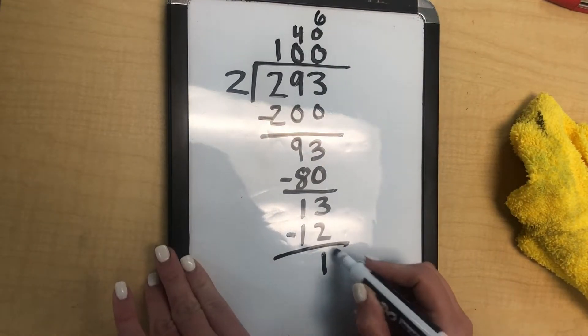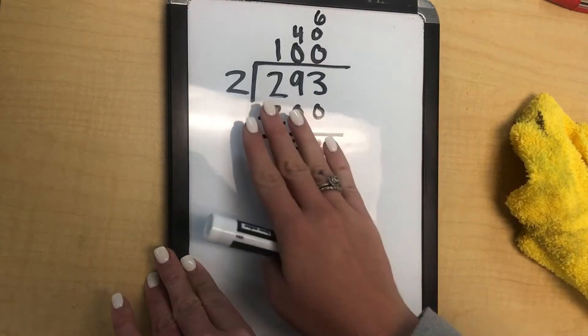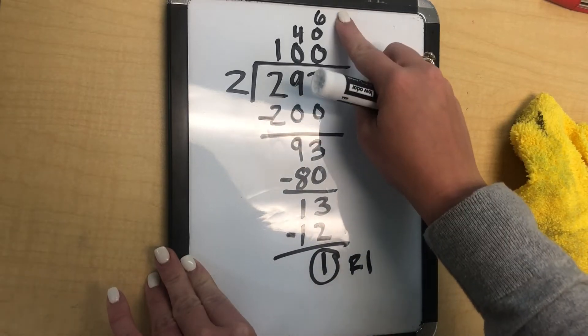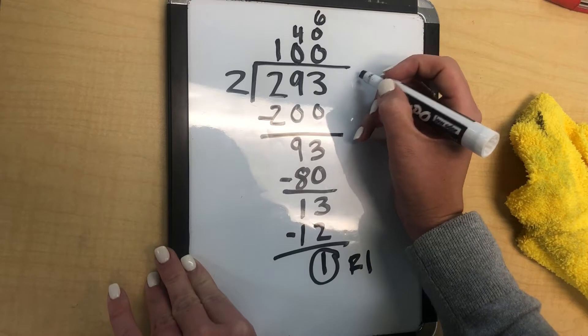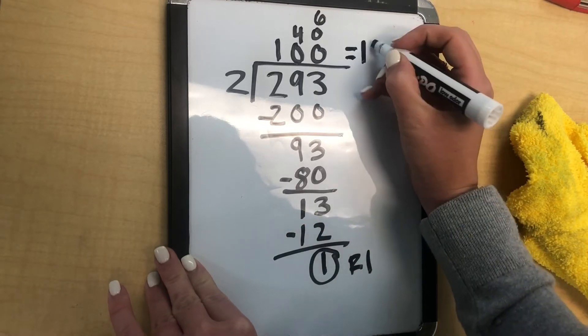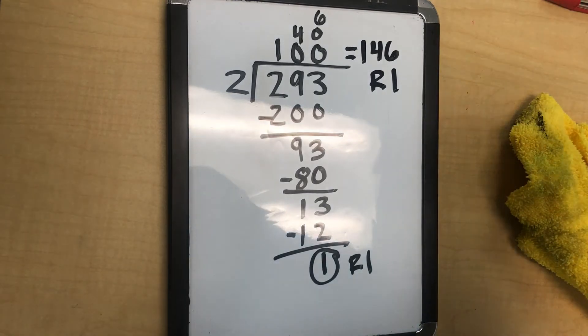Down here is our remainder. So we have remainder 1. And to get the quotient, or the answer to the division problem, you add up these numbers. So 146. So our answer is 146, remainder 1. Thank you.